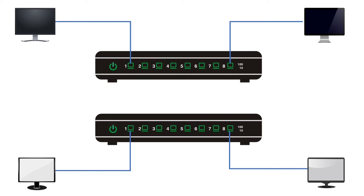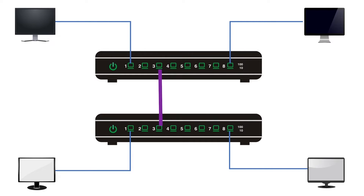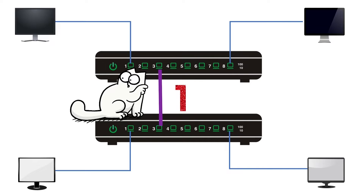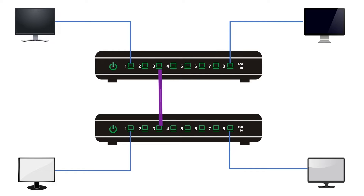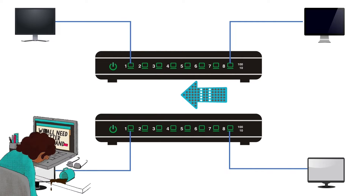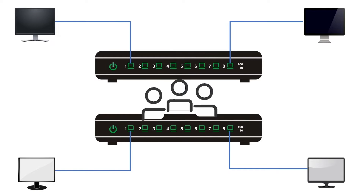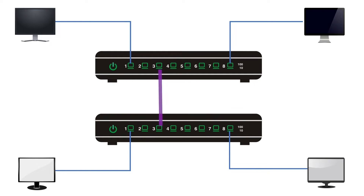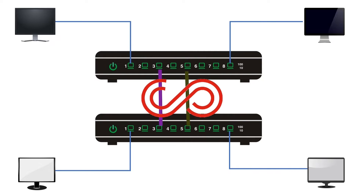Let us take an example. Here we have two switches. If we connect these switches with a single link, the link will work as a primary link. As long as the switches have only one link, there will be no loop between the switches. However, connecting switches with a single link always has a chance of connectivity loss. If switches work in the core layer, it could bring the entire network down. To avoid this situation, administrators use backup links. However, using more than one link between two switches creates switching loops.